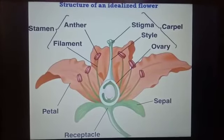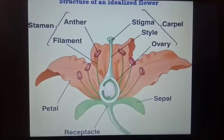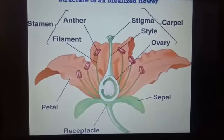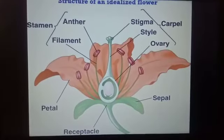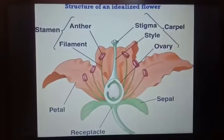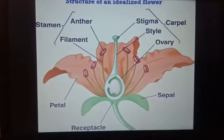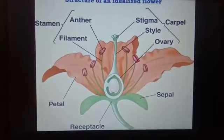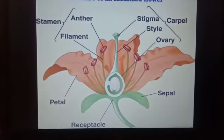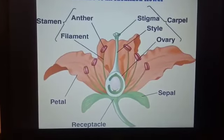The first part is the receptacle. The base of the flower to which all the parts are attached is called the receptacle. The second part is the sepals — the green leaf-like parts of the outermost circle of the flower. The third part is the petals — the colorful, usually scented parts of the flower that lie inside the sepals. The function of petals is to attract insects for pollination and to protect the reproductive organs of the flower.